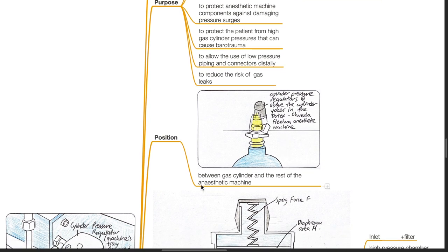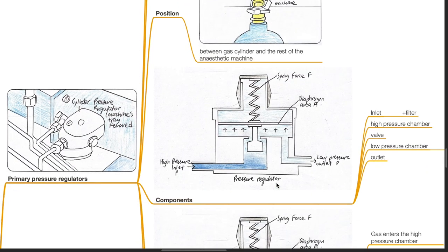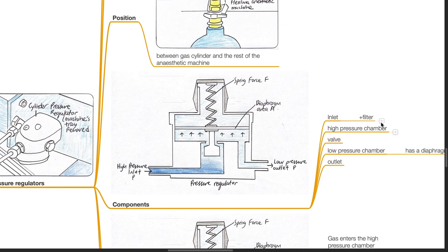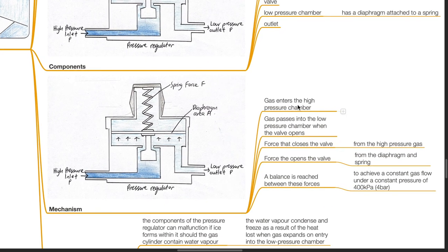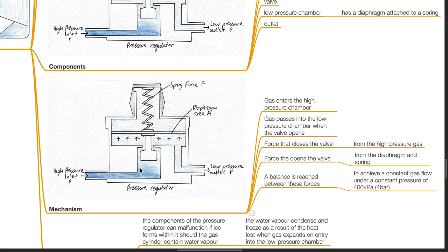Position: the pressure regulator is positioned between the gas cylinder and the rest of the anaesthetic machine. Components of the primary pressure regulator: inlet, a filter, high pressure chamber, valve, low pressure chamber with a diaphragm attached to a spring, and outlet. Mechanism: gas enters the high pressure chamber and passes into the low pressure chamber when the valve opens. The force that closes the valve is from the high pressure gas. The force that opens the valve is from the diaphragm and the spring. A balance is reached between these forces to achieve a constant gas flow under a constant pressure of 4 bar.